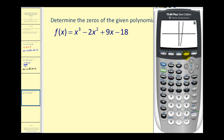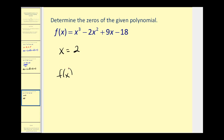It looks like the real zero will be x equals two. Let's verify: press second, trace, option two. The cursor is at x equals zero, so hit the right arrow until it comes into view. Press enter for the left bound, move to the right side, press enter, and enter one more time. One of the zeros is x equals two. That tells us x minus two is a factor of this function, and since there was only one real zero, the other two will be complex zeros.